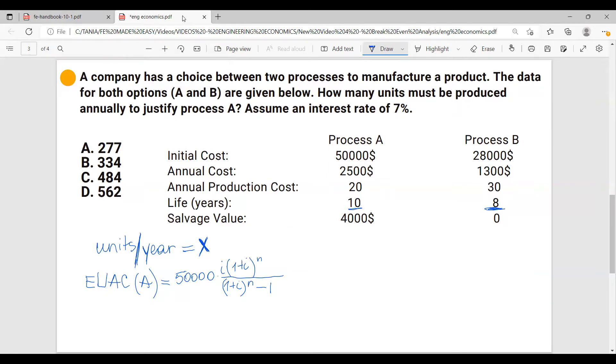So next, we have an annual cost of $2,500. And it's already an annual amount. So we don't have to convert it. So it's going to add $2,500 annual production costs. And these are the costs per unit. So we have this is another annual amount. So we don't have to convert it. And it's a cost. So it's positive. So we have 20 times X, because these are the cost per unit, and we have X units.